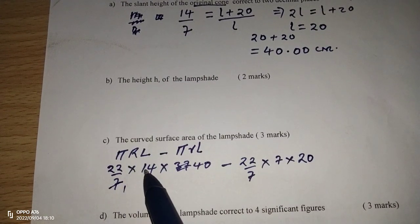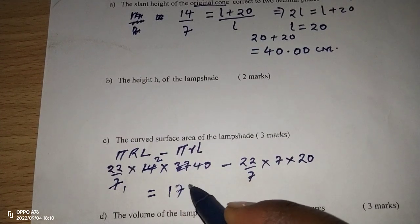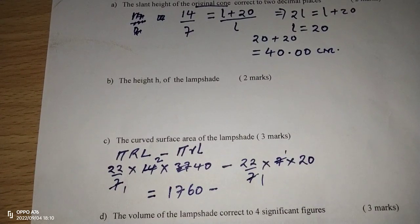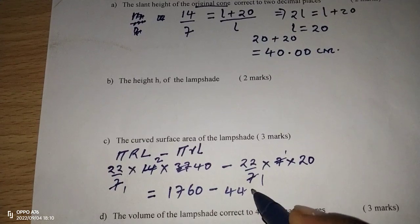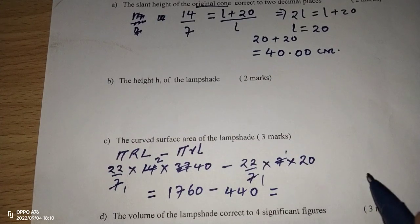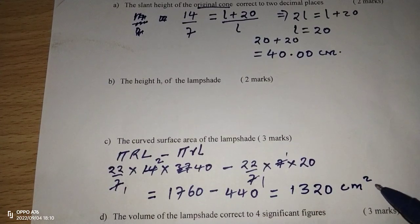Simplifying: (22 × 2 × 40) = 1760, and (22 × 20) = 440. So the curved surface area is 1760 − 440 = 1320 square centimeters.